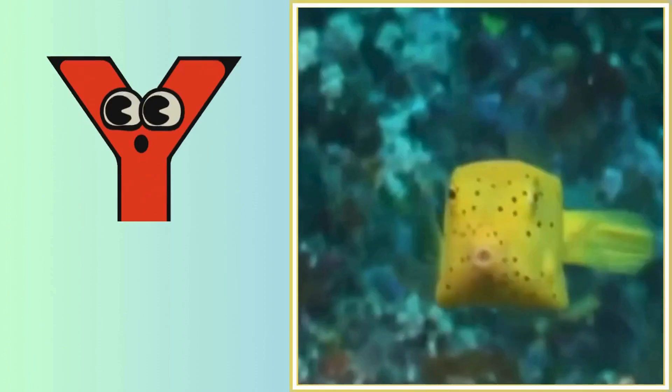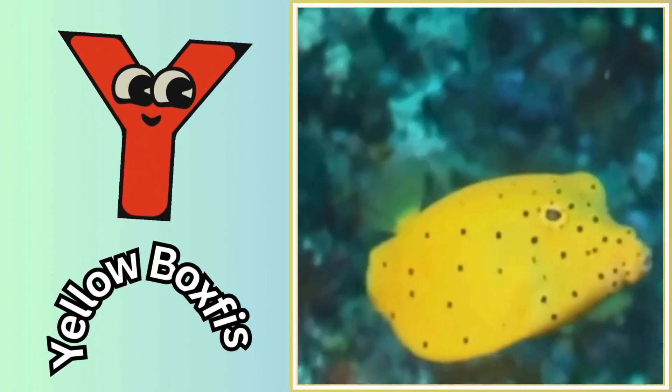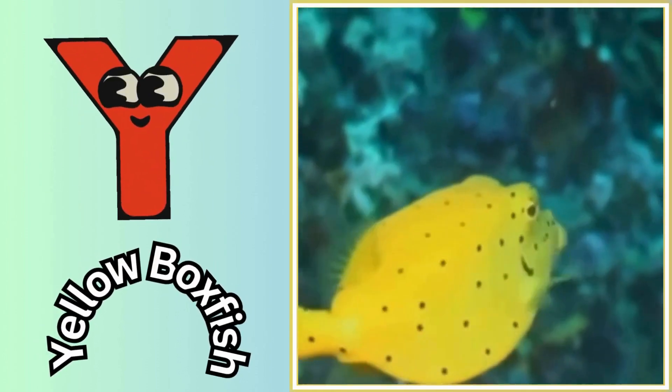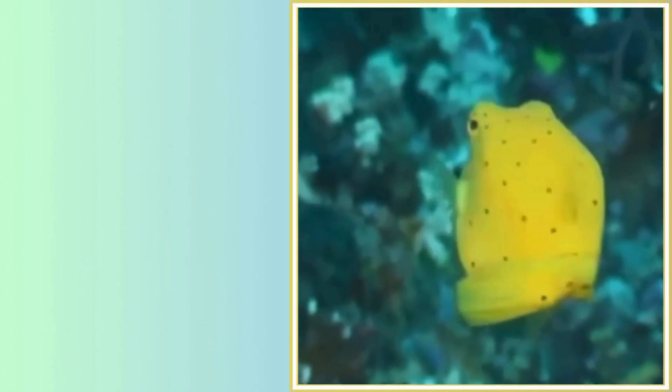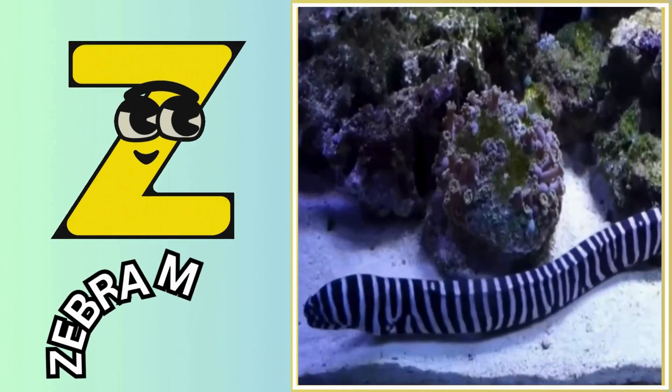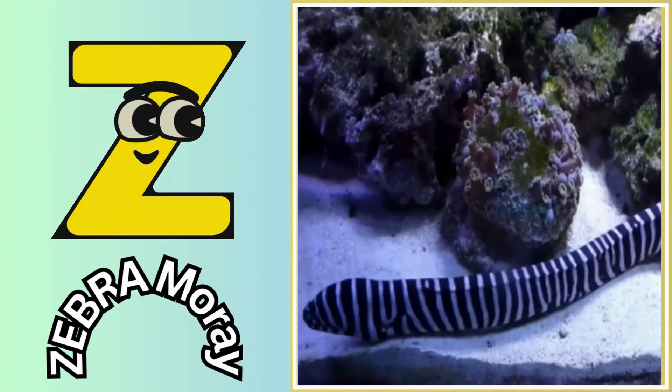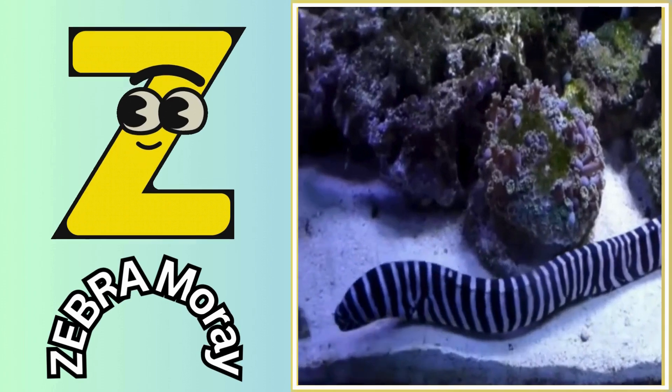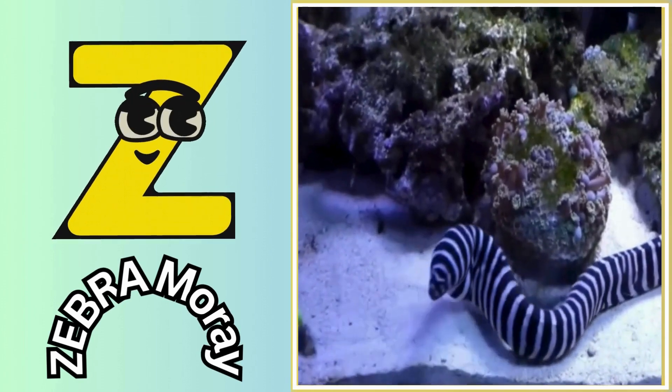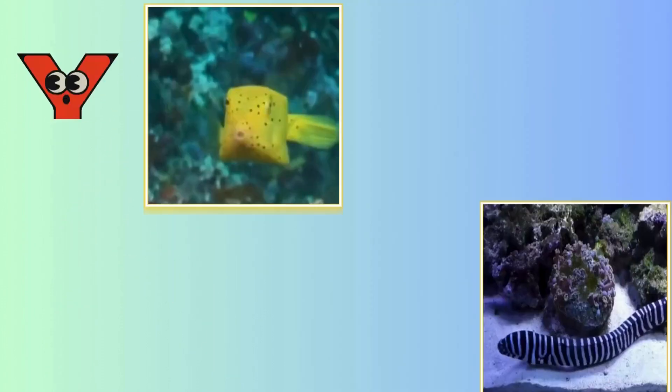Y is for yellow boxfish. Y, yellow boxfish. Z is for zebra moray. Z, zebra moray.